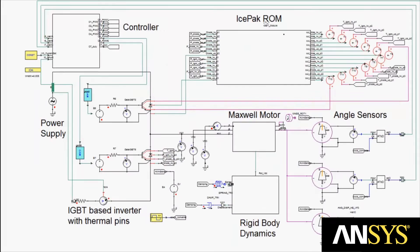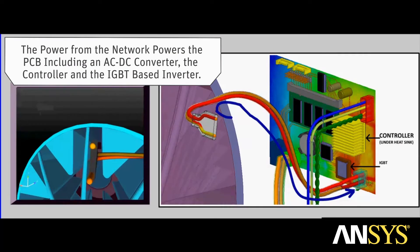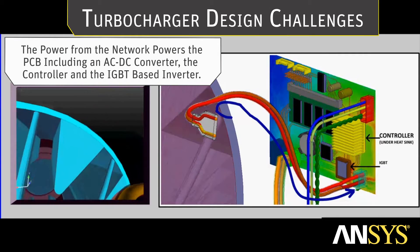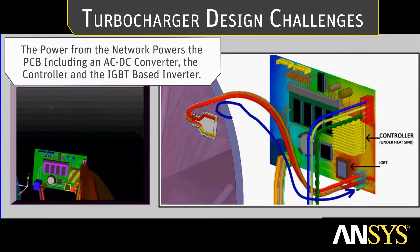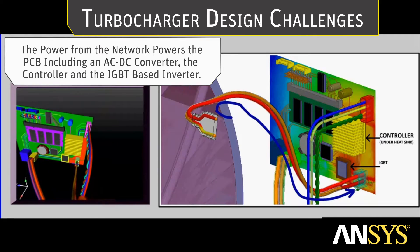We first consider the power supply in the ANSYS Simplora system simulation. The power is supplied to the IGBT inverter modules and the controller. The power from the network powers the printed circuit board including an AC-DC converter, the controller, and an IGBT-based inverter.